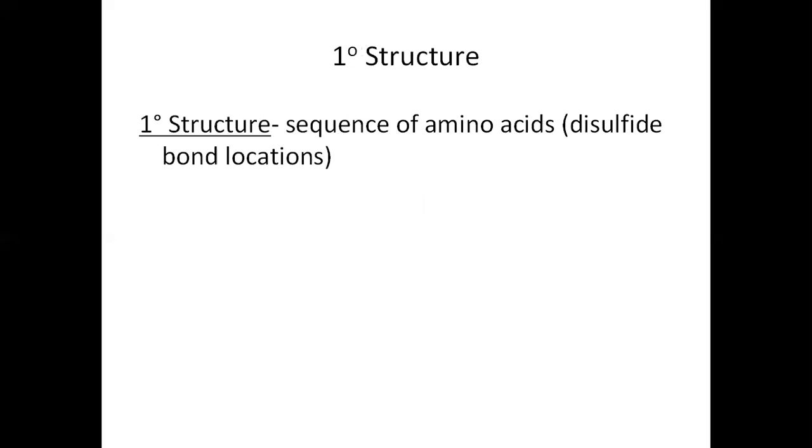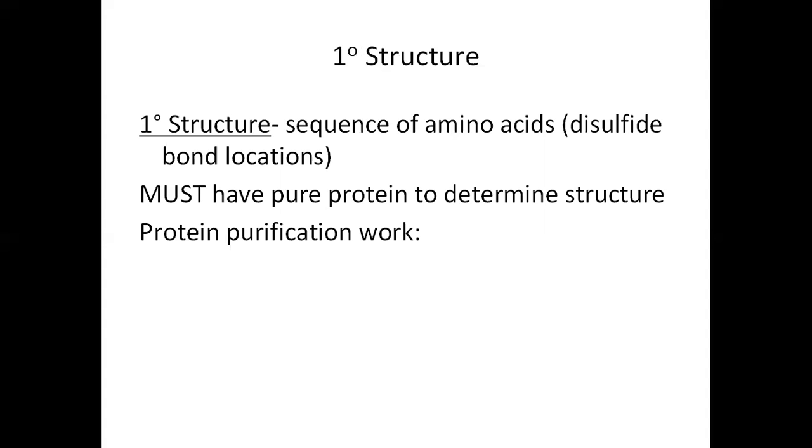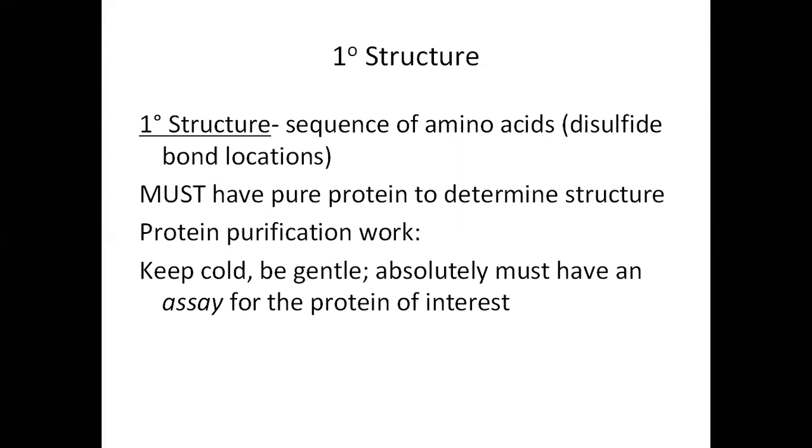Primary structure is the sequence of amino acids, including disulfide bond locations. In order to determine primary structure, we must have a pure protein with which to work. Much of the discussion of purifying proteins is in the tools of biochemistry section at the end of chapter 5. In order to purify proteins, some things which are very important is to keep the protein cold while working on it. Secondly, be very gentle with it. And thirdly, we must have an assay or means of detection for the protein we are interested in.